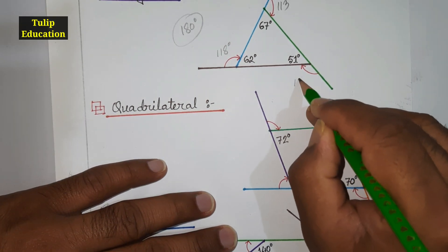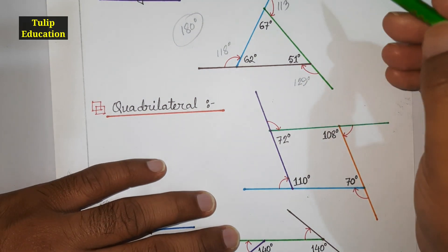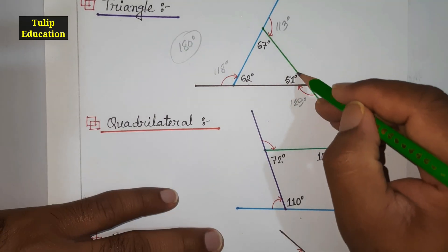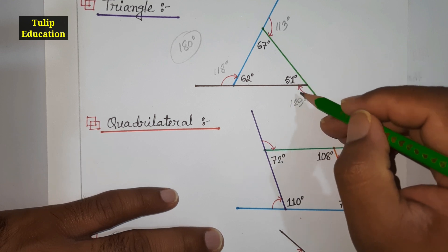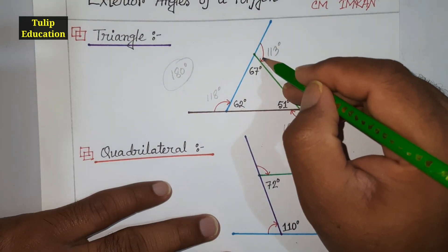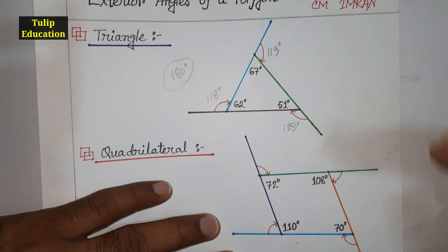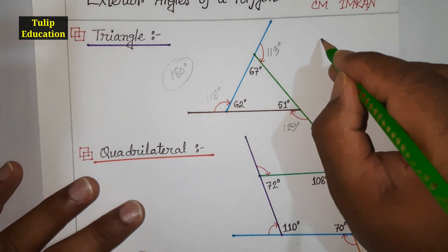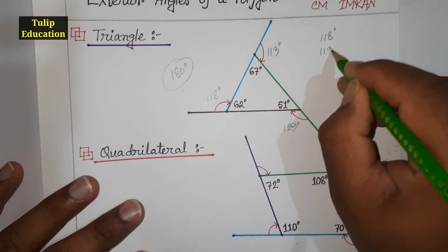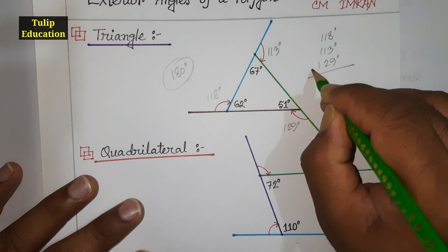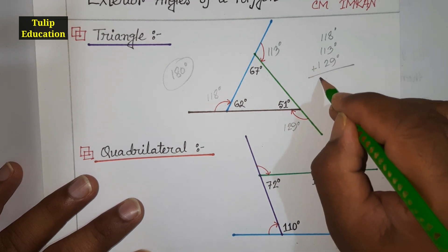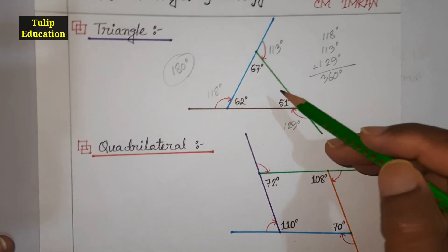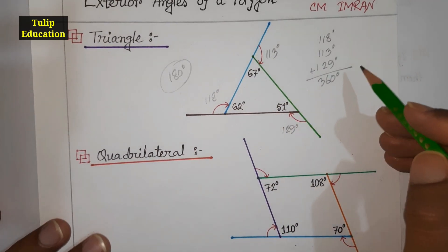Each interior angle and its corresponding exterior angle always sum to 180°. Now if we add all three exterior angles — 118°, 113°, and 129° — the result is 360°. That means the sum of the exterior angles of any polygon is 360°.